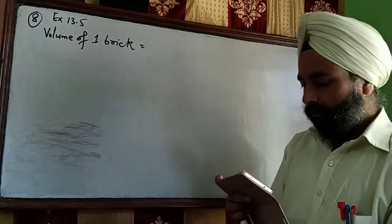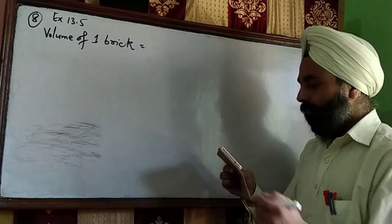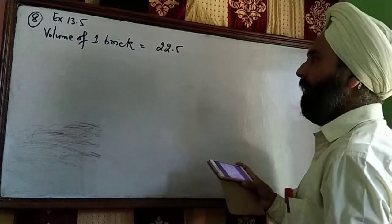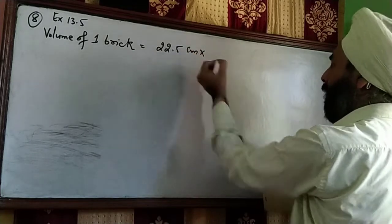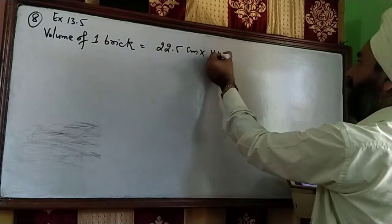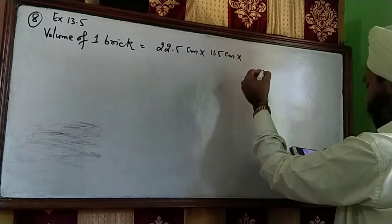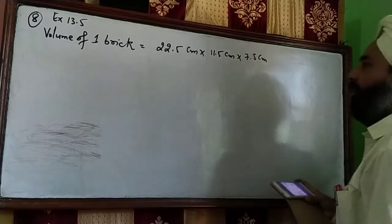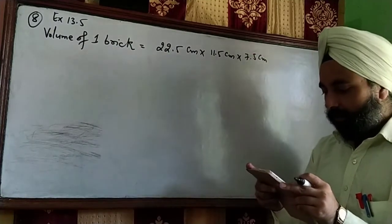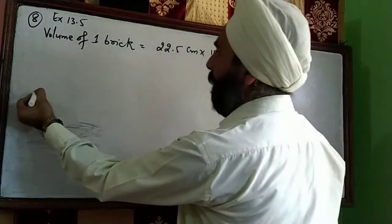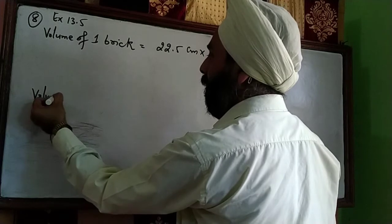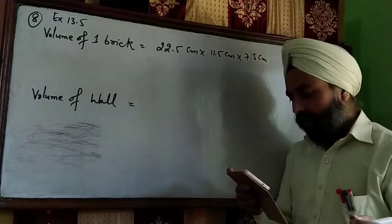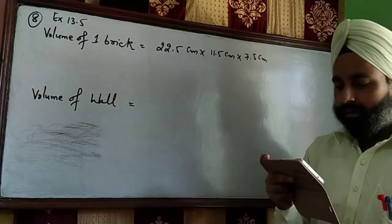We will directly calculate the volumes. The dimensions of the brick are 22.5 cm × 11.5 cm × 7.5 cm. The dimensions of the wall are given in meters: 10 meters × 6 meters × 1.5 meters.